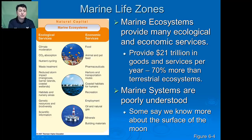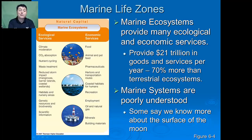They are a mechanism for transportation and recreation, as well as being a major source of oil and natural gas. As a result, they provide $21 trillion in goods and services each year, actually 70% more than terrestrial ecosystems. Unfortunately, these marine systems are poorly understood — some say we actually know more about the surface of the moon.